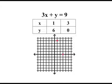We can plot the points 1, 6 and 3, 0. And this is the line which represents the graph of 3x plus y equal to 9.